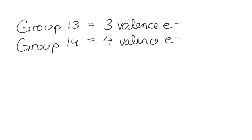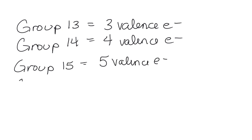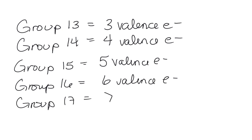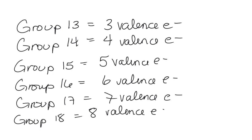Basically what you need to know: all elements in group 13 have three valence electrons, all elements in group 14 have four valence electrons, all elements in group 15 have five valence electrons, group 16 has six valence electrons, group 17 has seven valence electrons, and group 18 — the last group — they all have eight valence electrons.